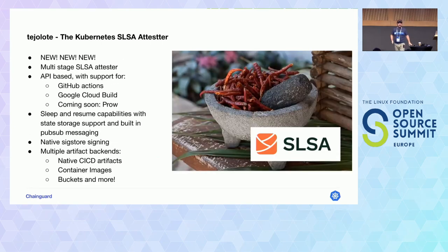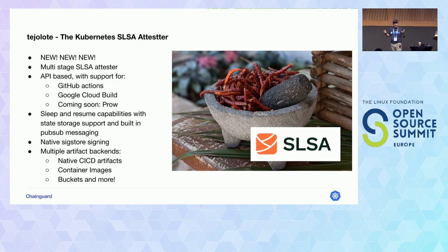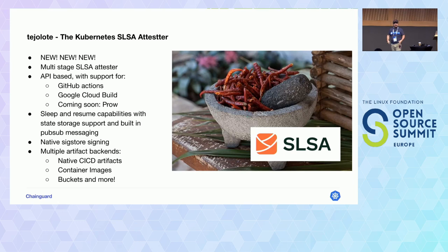The new tool I want to show you is called Tejolote. For those who are not Mexican enough, the tejolote is the handpiece of the Mexican mortar used to make salsa. You take the molcajete, grind your tomatoes and chilies and other delicious stuff in it, and you get salsa out of it. That's why I named it Tejolote — also because I wanted to have fun with people trying to pronounce it.